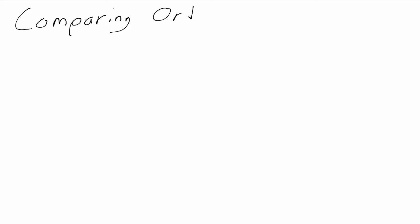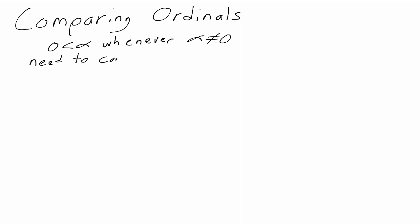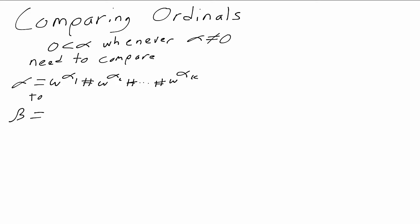So how do we compare ordinals? Zero is definitely the smallest ordinal — every other ordinal is greater than zero. So we only need to worry about comparing two ordinals written as sums. We have alpha equal to omega to the alpha one plus ... plus omega to the alpha k, and beta equal to omega to the beta one plus ... plus omega to the beta r, and we want to know which is bigger. Since the ordinals are built inductively, the alpha i and beta i are simpler, so we assume we've already figured out how to compare them.